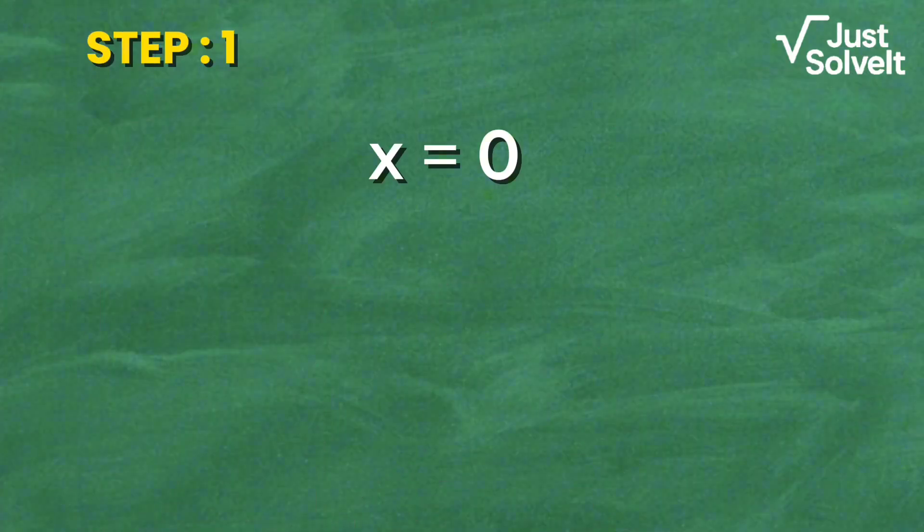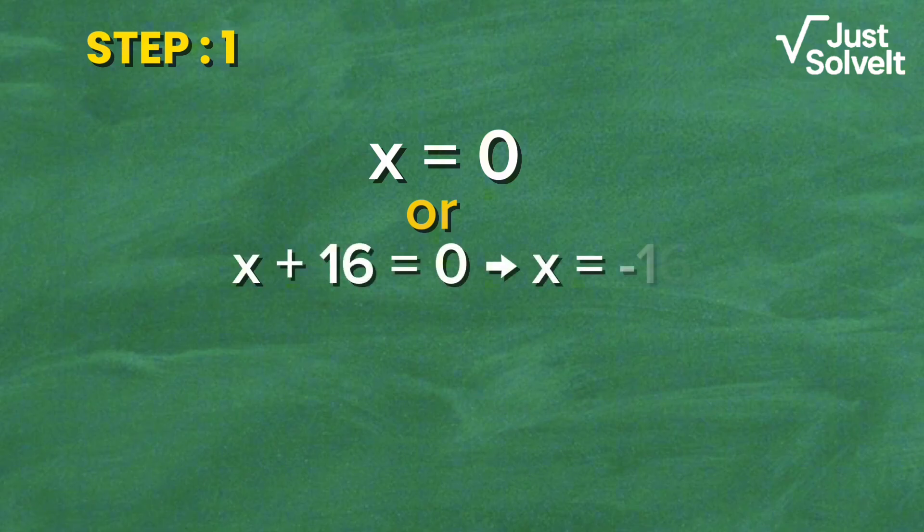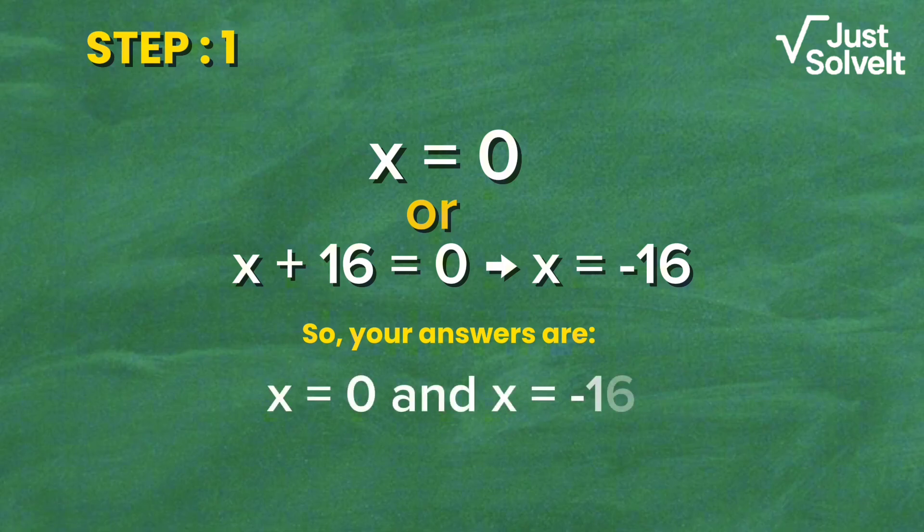Now apply the zero product rule. Either x equals 0, or x + 16 equals 0, which gives x equals negative 16. So your answers are x equals 0 and x equals negative 16.